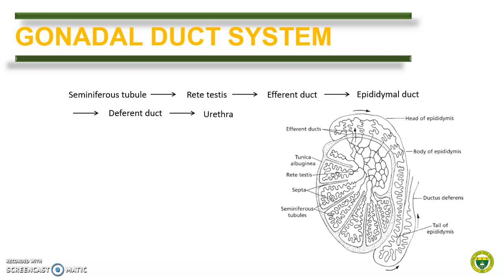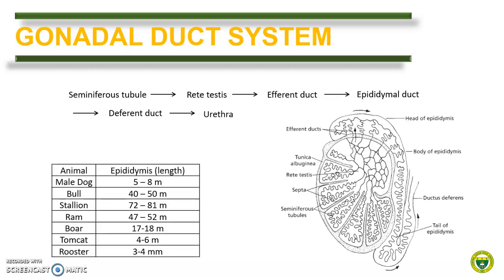In birds, the deferent duct enters the urodeum of the cloaca. In general, different animals — both mammals and birds — have the same gonadal duct system. Variation can be seen in the length, especially in the epididymal duct. Here is a table showing the length of the epididymis of different male animals. As you can see, the larger the animal, the longer is the duct.